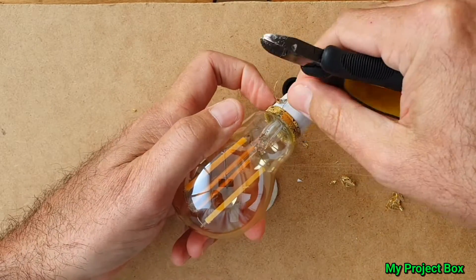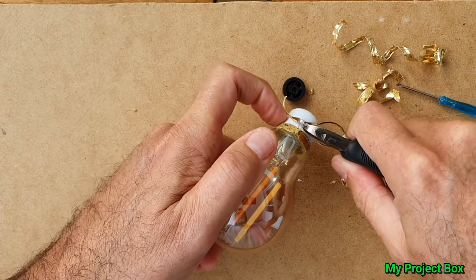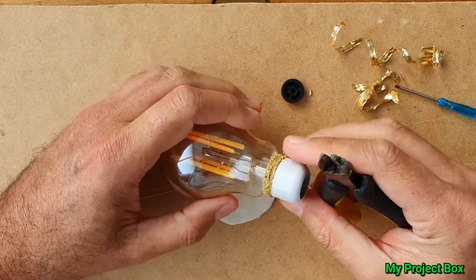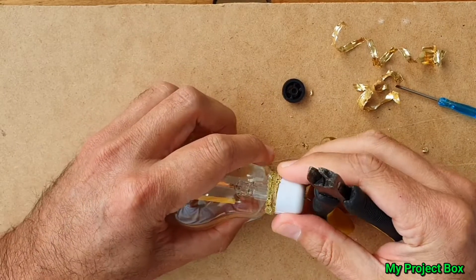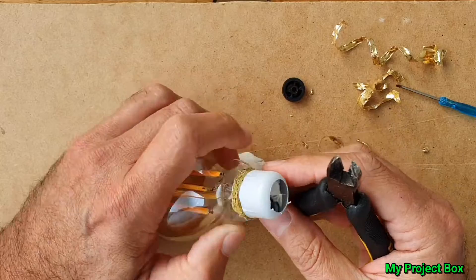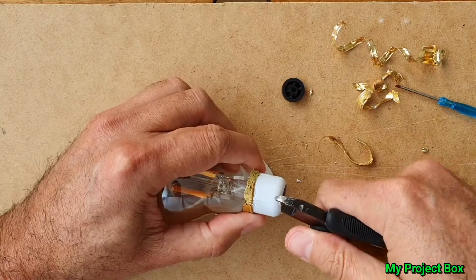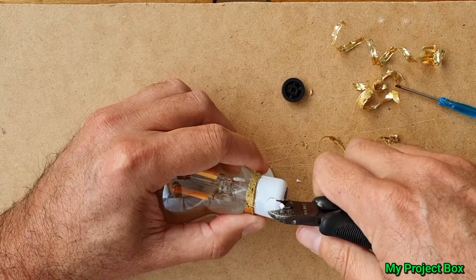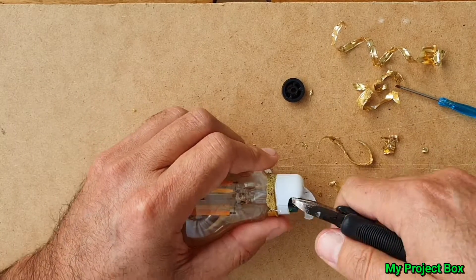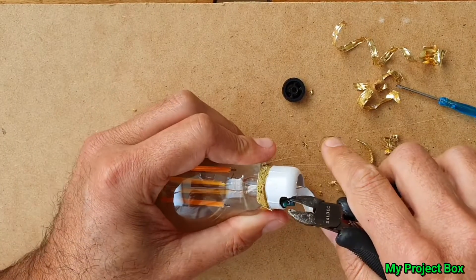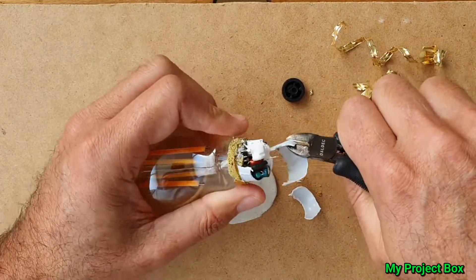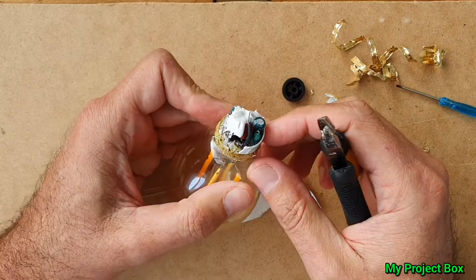I think we're nearly there. We'll carefully cut the neutral wire off here. There we go. So now you might have to get a bit destructive on this piece of plastic. There we go. Nearly inside.